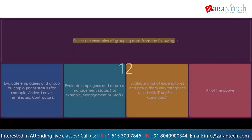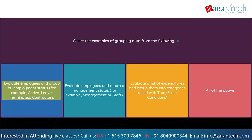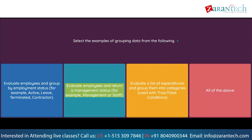Question: Select the examples of grouping data from the following. Option 1: Evaluate employees and group by employment status, for example, active, leave, terminated, contractor. Option 2: Evaluate employees and return a management status, for example, management or staff. Option 3: Evaluate a list of expenditures and group them into categories, used with true/false conditions. Option 4: All of the above.